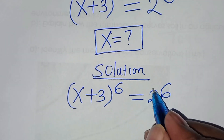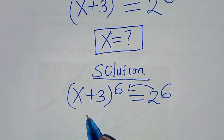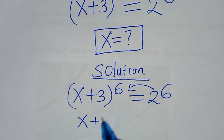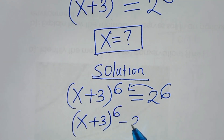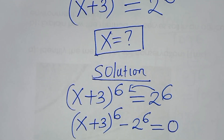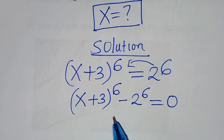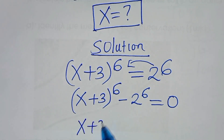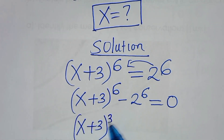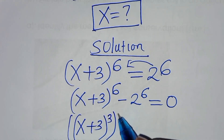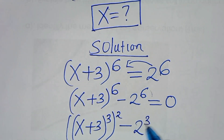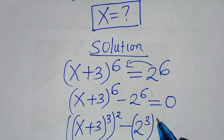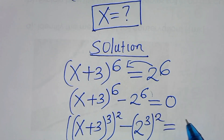The first thing to do here is take 2 to the power 6 on the left hand side, so that we have x plus 3 raised to the power 6, subtract 2 to the power 6, this is equal to 0. The next step is that x plus 3 to the power 6 can be expressed as x plus 3 to the power 3, raised to the power 2, then subtract 2 to the power 3, raised to the power 2, this is equal to 0.